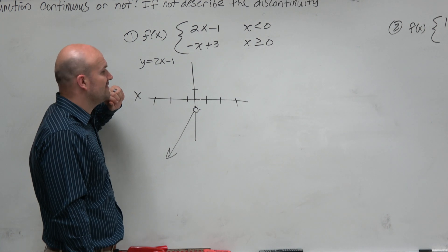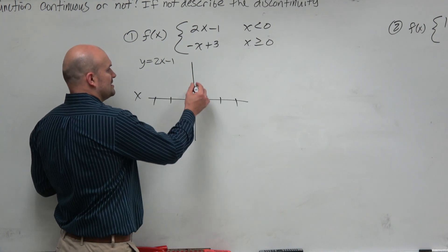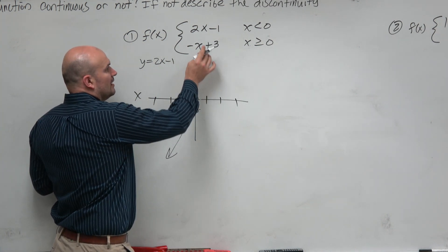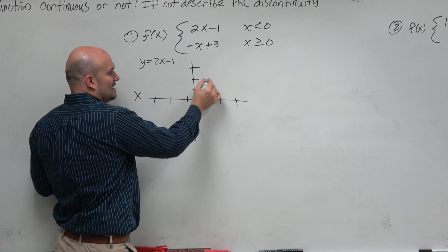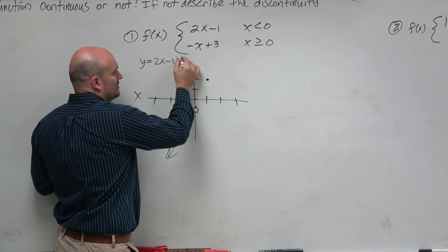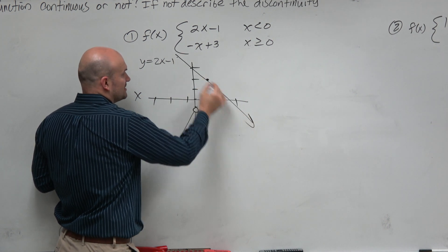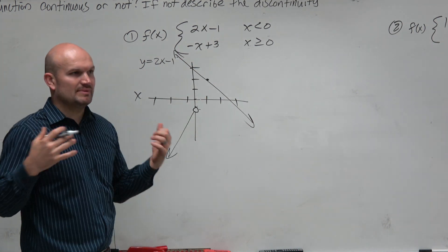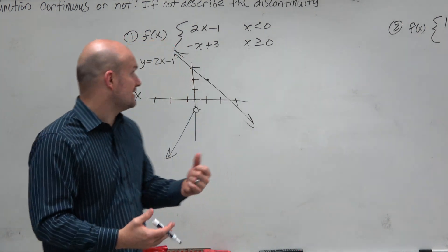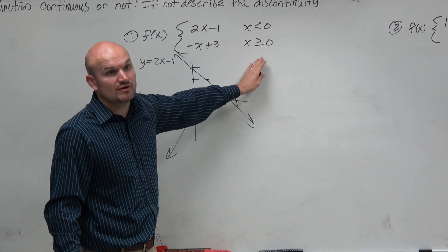The next one is, let's graph negative x plus 3. This one has a different y-intercept, which is positive 3. We have a negative slope, so it's down and to the right one or up and to the left one. You're going to graph something that looks like that. I'm not trying to be exact, but what we want to recognize is this is for only x values that are greater than or equal to 0.